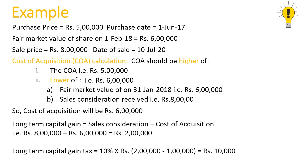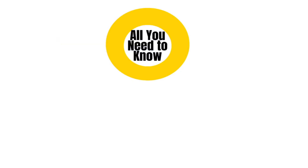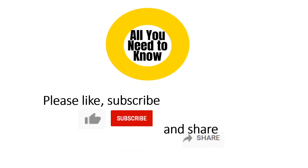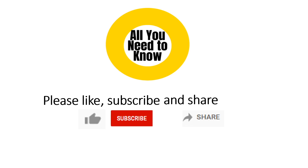And your long-term capital gain will be Rs. 8,00,000 minus Rs. 6,00,000, i.e., Rs. 2,00,000. Tax on long-term capital gain will be Rs. 1,00,000 × 10%, i.e., Rs. 10,000. I hope that clears it up. We will follow up with another video on how to save long-term capital gain tax soon, so stay tuned. Please like, subscribe, and share. Do let us know if you want us to make videos on any specific topic in the comment section below. Thanks for watching.